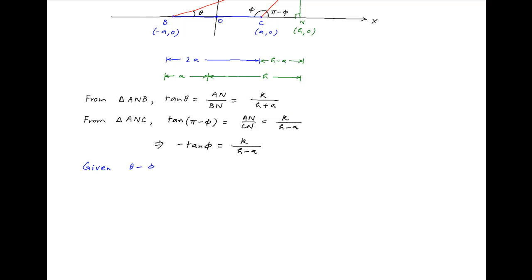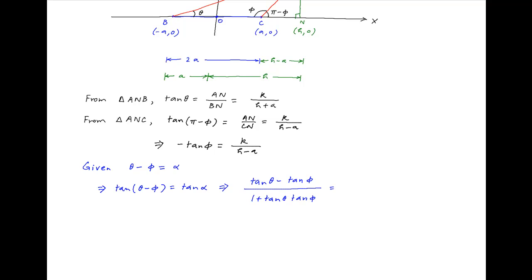Now we are given that theta minus phi is equal to the angle alpha. Taking the tan of both sides, we get tan(theta − phi) equals tan alpha, which implies that (tan theta minus tan phi) divided by (1 plus tan theta · tan phi) is equal to tan alpha.